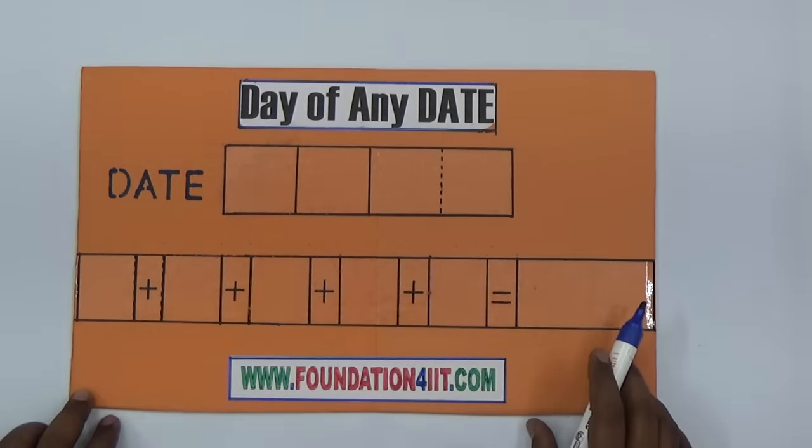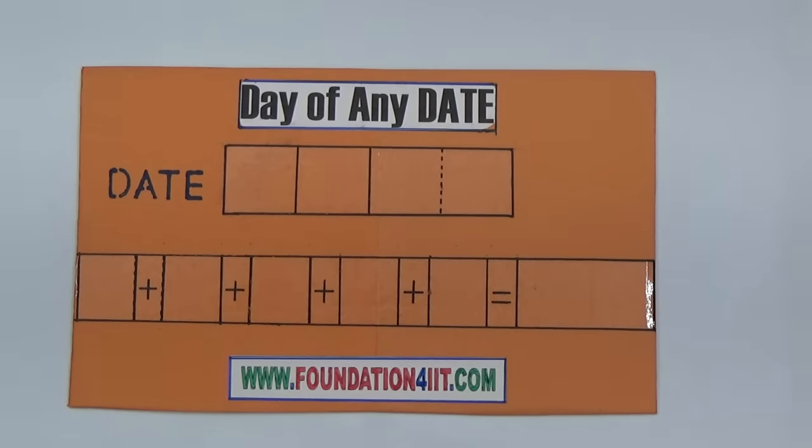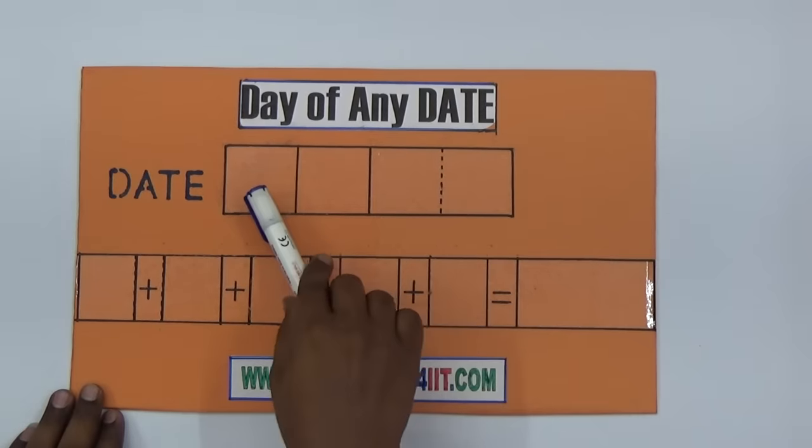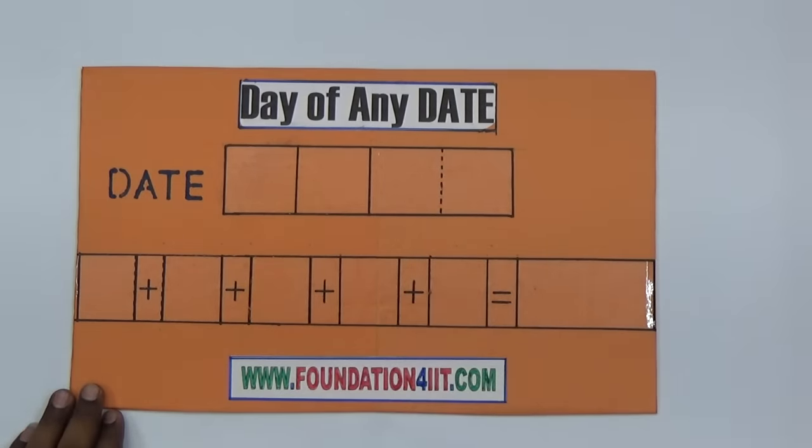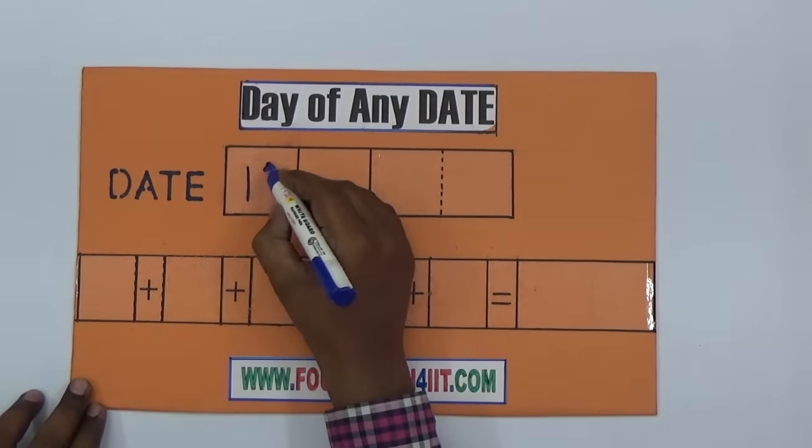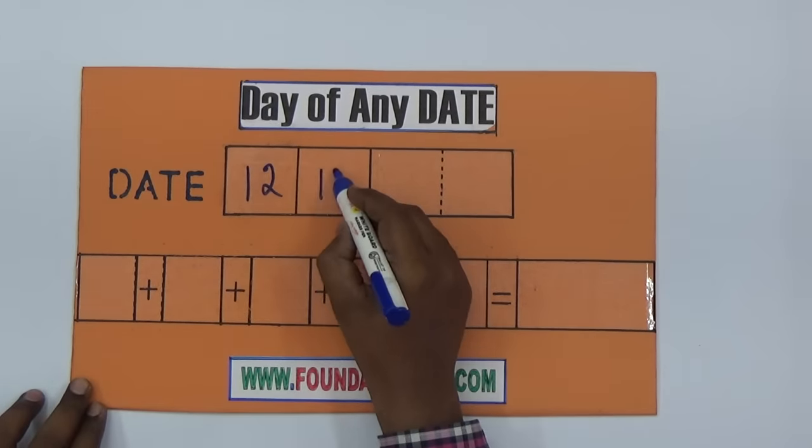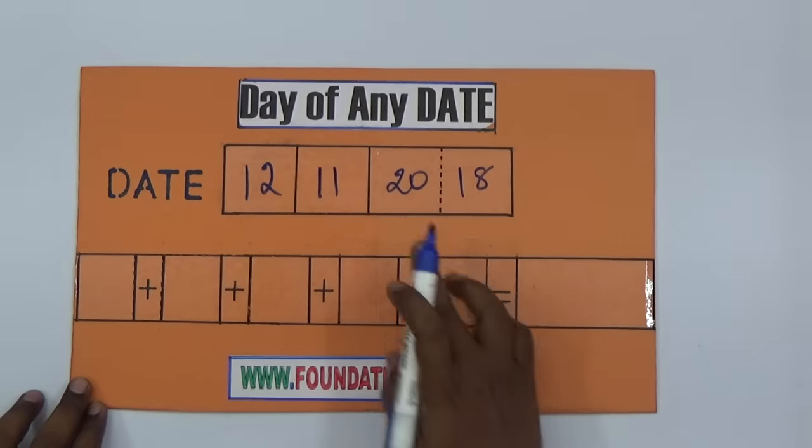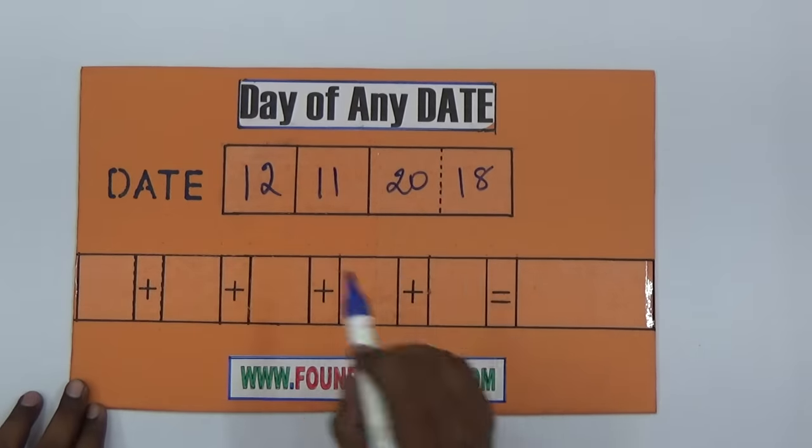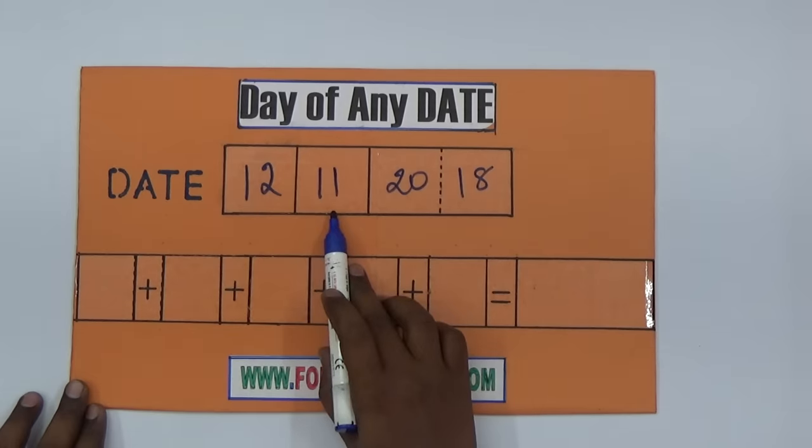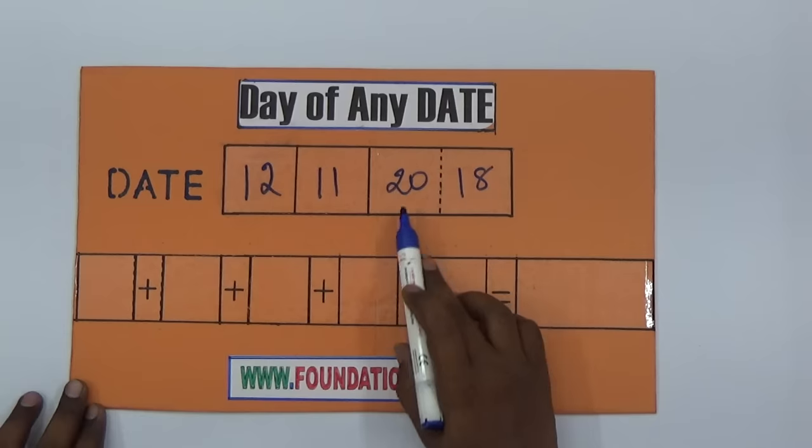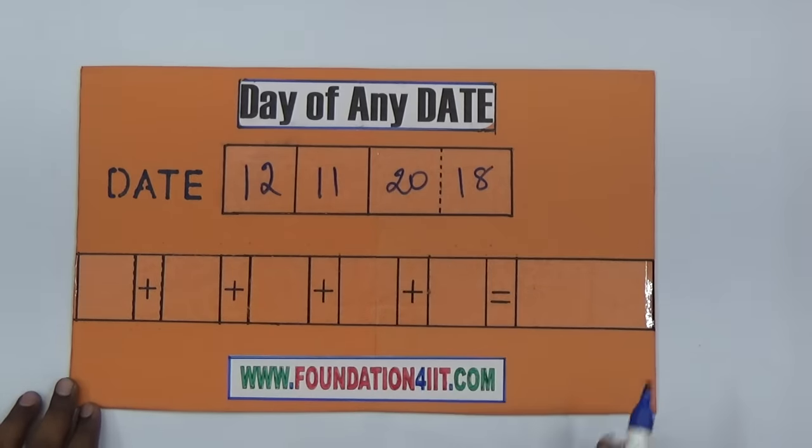I'll show you how to solve in a simple, easy, and very fast way. For example, we'll do today's date. The date should be written here in these four boxes: date, month, and year. Today is 12, November is 11, and 2018. So 20 is the century and 18 is the year.